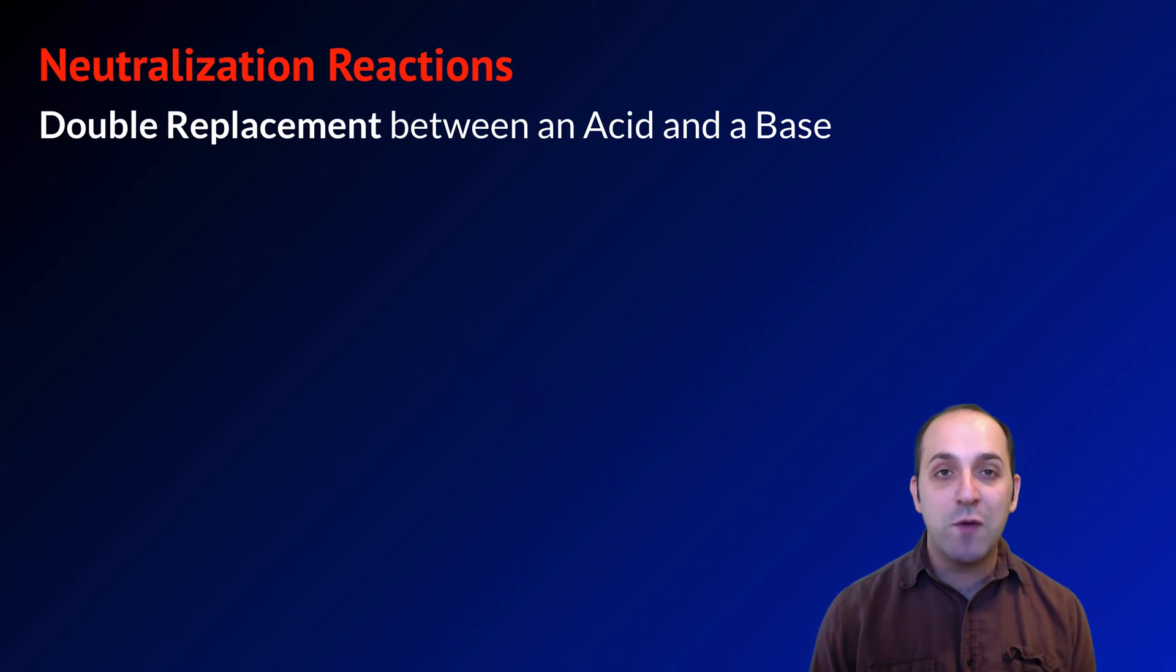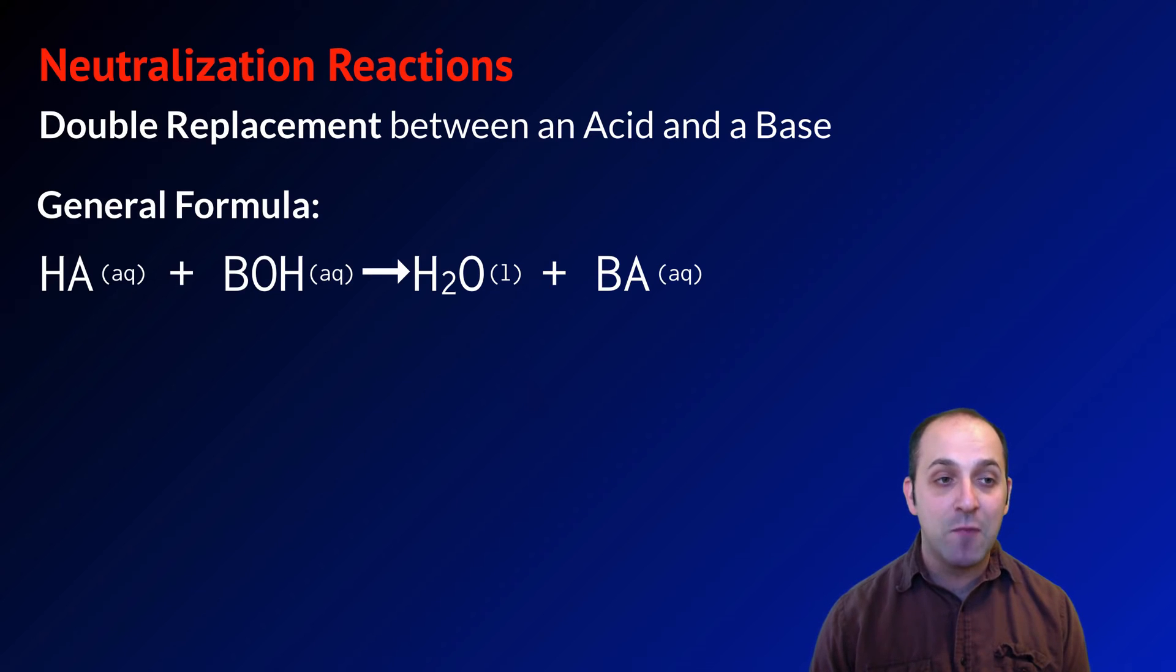So a neutralization reaction is a double replacement reaction between an acid and a base. The general formula is to take an acid and a base and react them together. That's going to produce a precipitate, which is water in this case, and an ionic compound, which is going to be called a salt.